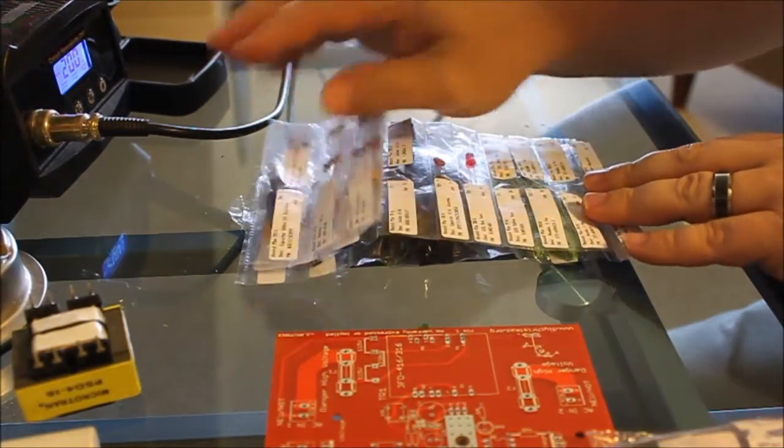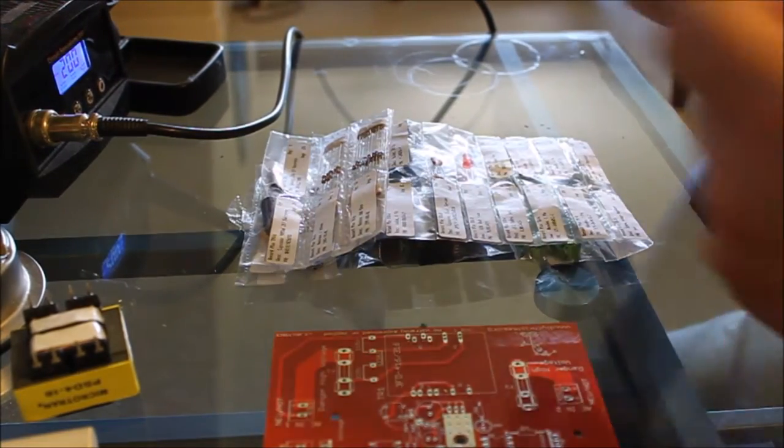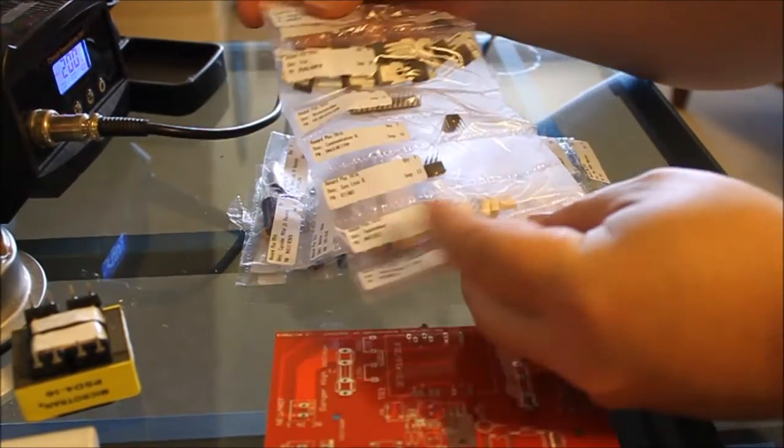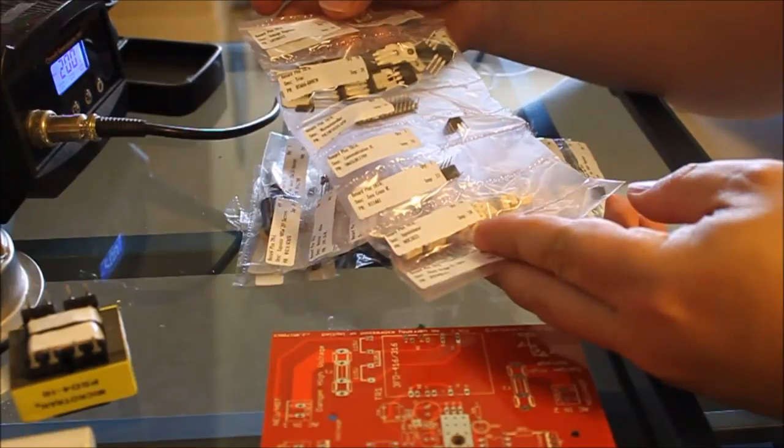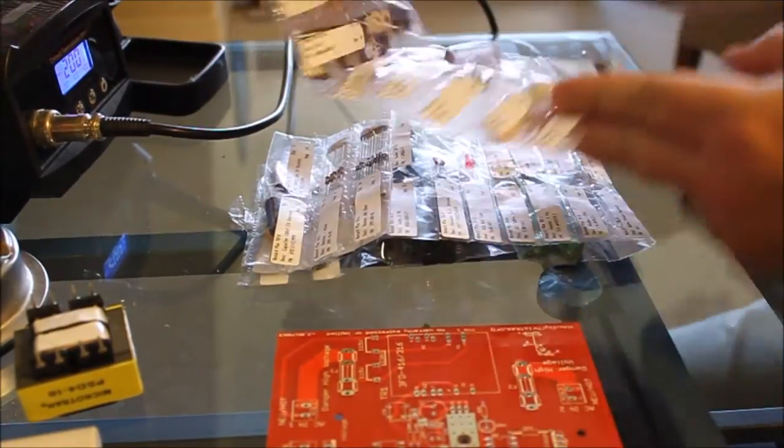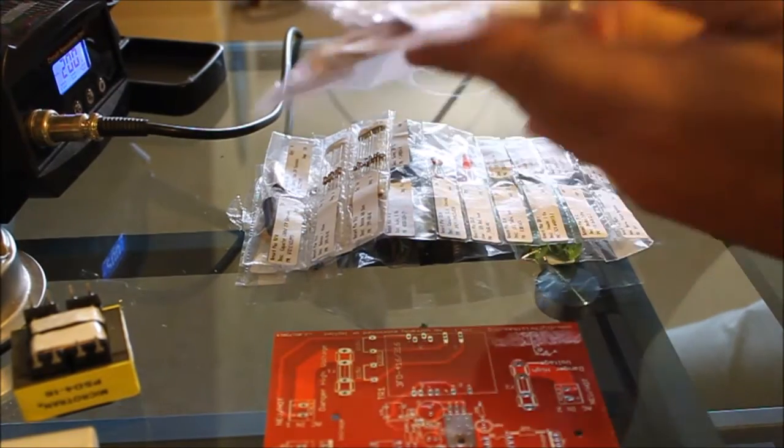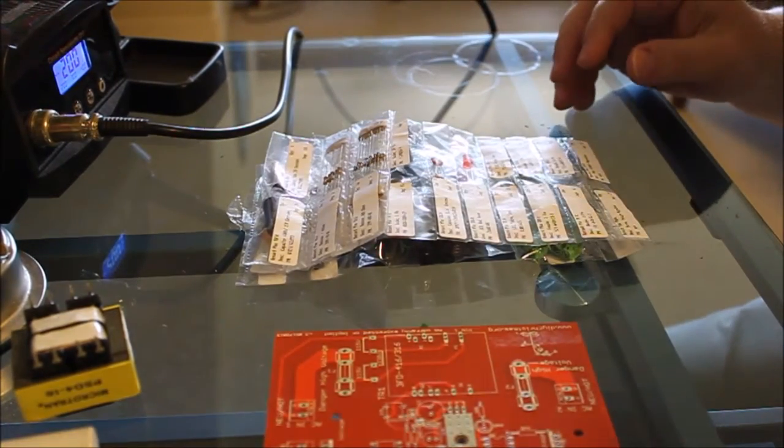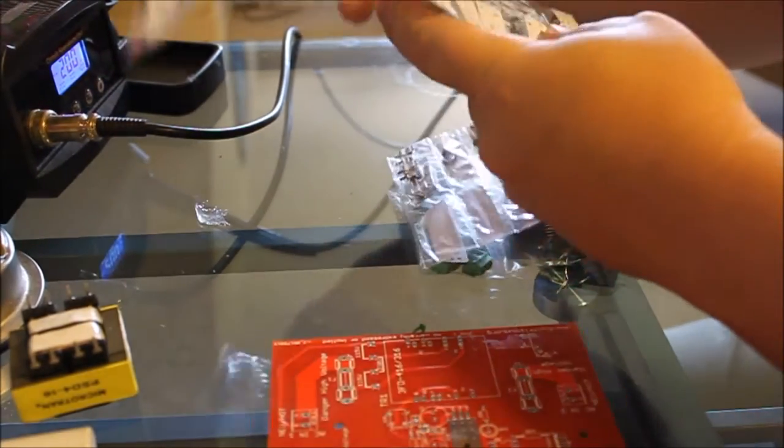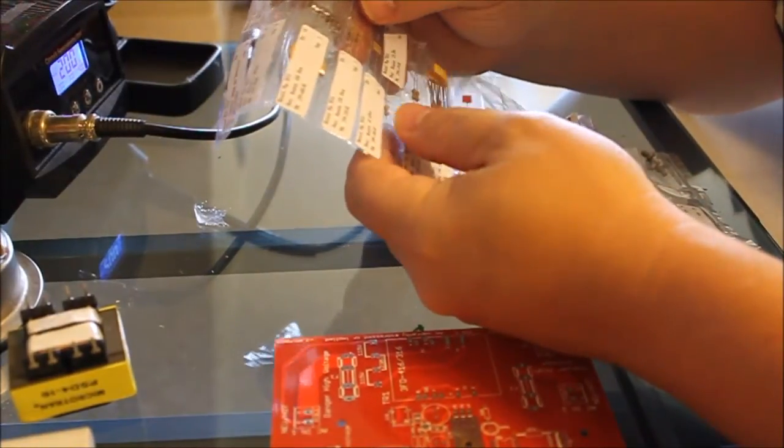These are the non-static sensitive parts in one portion here. In the other portion are all the static sensitive parts in the pink anti-static bags. We're not going to need the static sensitive parts right now, so we're going to fold them up and put them over here and put them away.